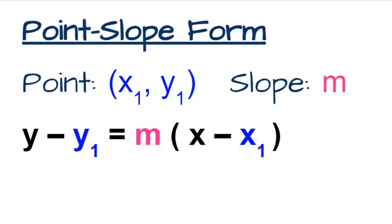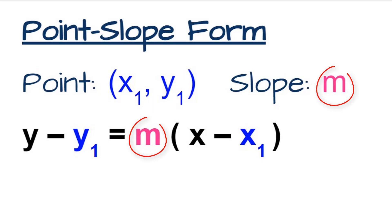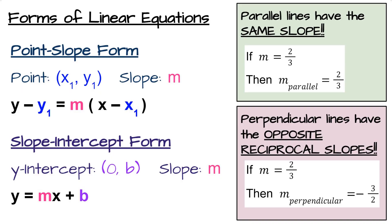After a few algebraic steps, it's easy to transform a point-slope form of an equation of a line into slope-intercept form. Point-slope looks like this: y minus the y part of the point is equal to m times x minus the x part of the point. A reminder that parallel lines always have the same slope and perpendicular lines always have opposite reciprocal slopes.